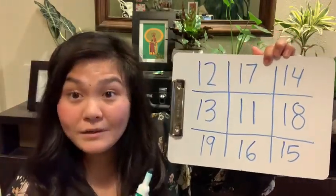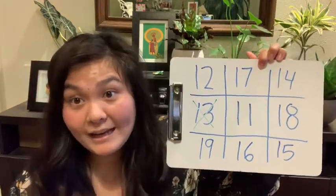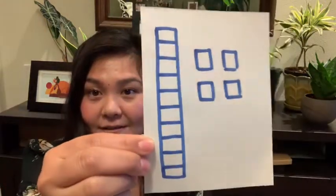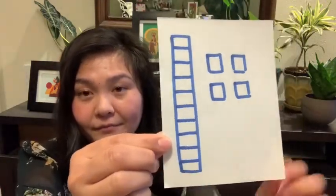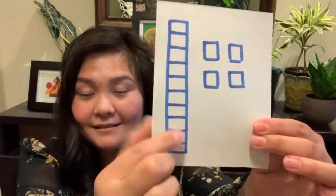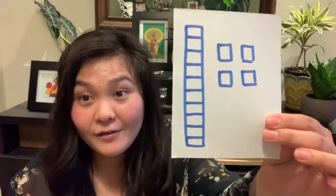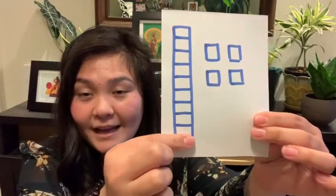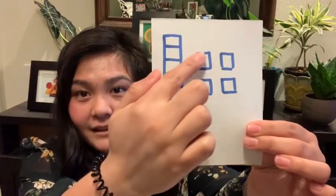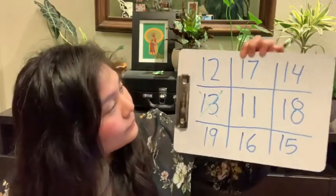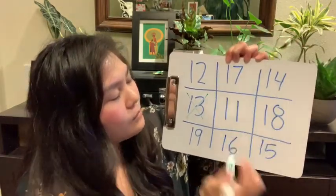You can either cross it out with a marker, or if you want to save your game board and reuse it, you can take a small item and put it right on 13 to cover it up. Here's our next card. I see a 10 stick and I know right away this is a group of 4, so I have 10 and 4. Counting on from 10: 10, 11, 12, 13, 14. So 14 is the same as 10 and 4. Find the number 14 on your bingo board — there's a 1 and 4, that's 10 and 4 more — and cross it out.